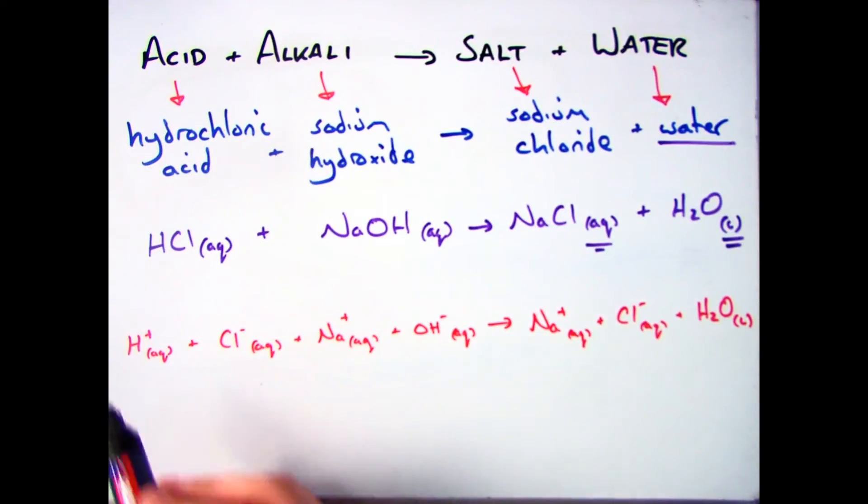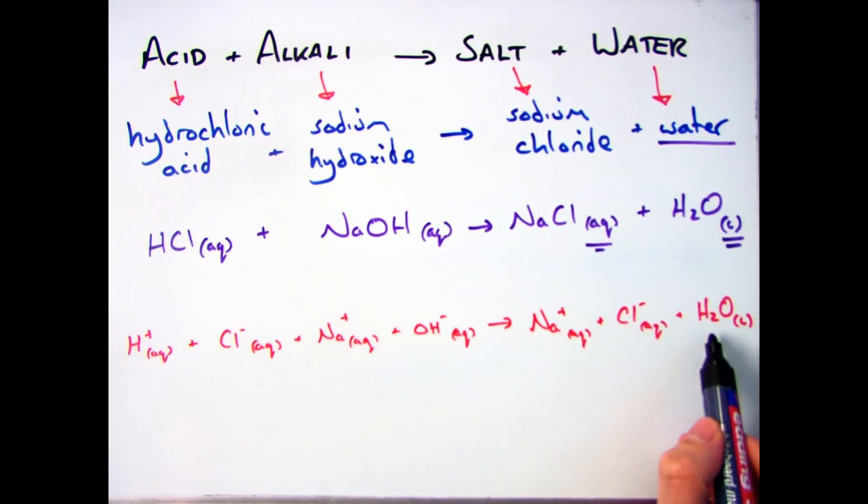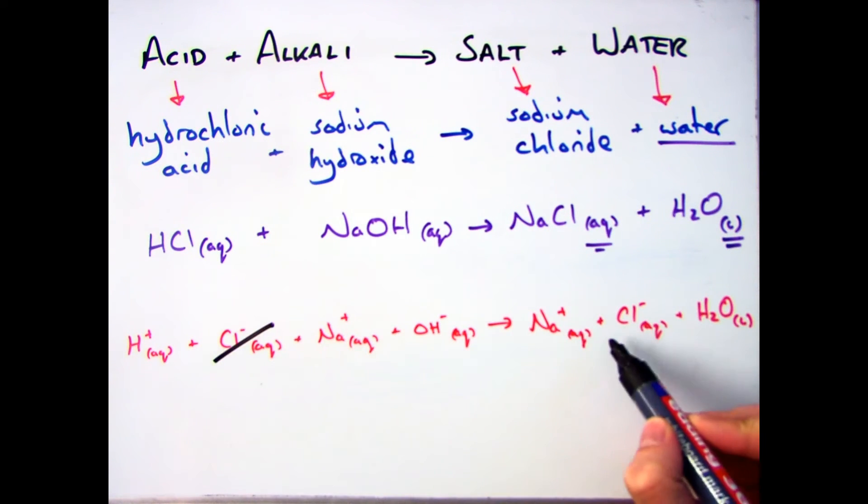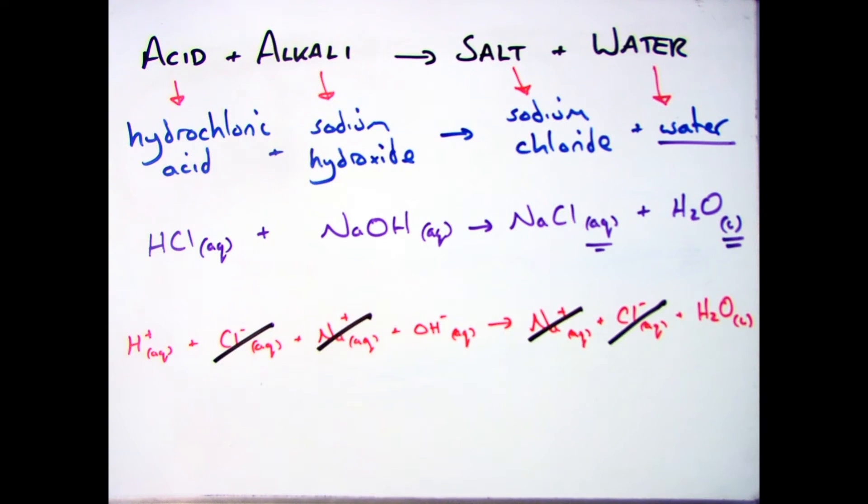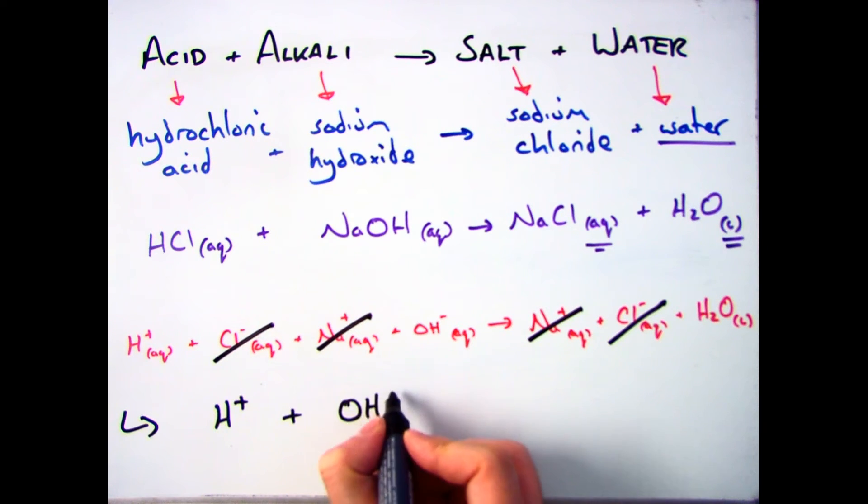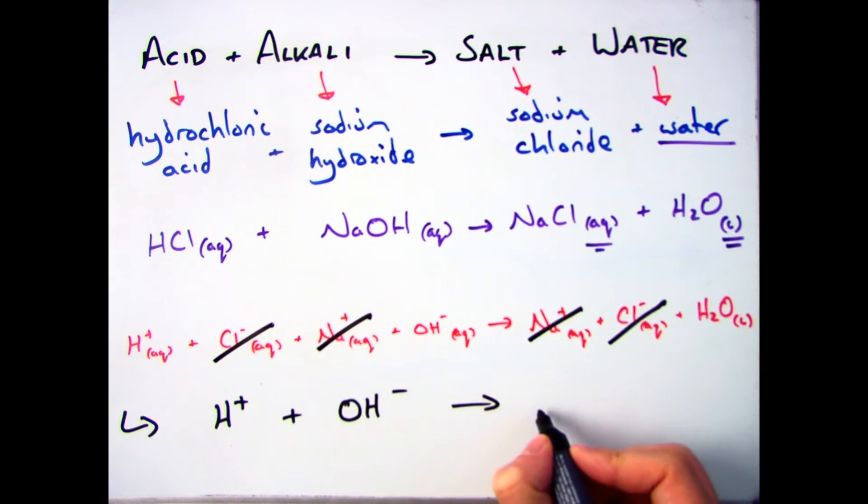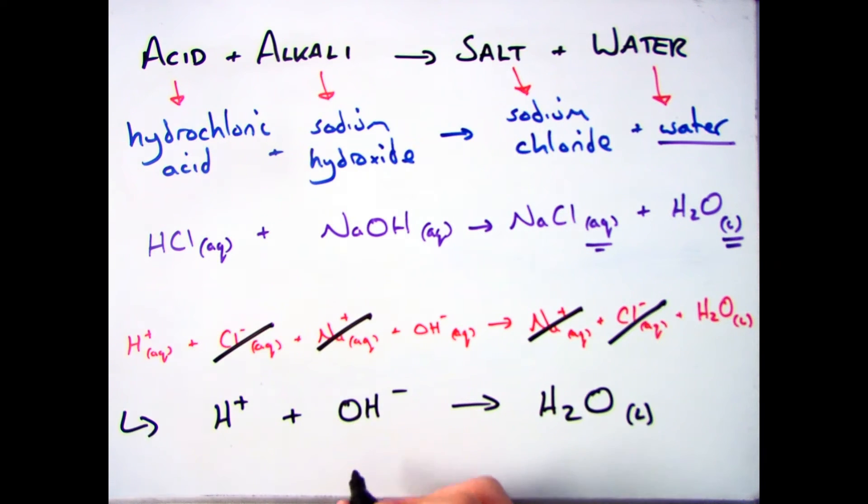To prove that in a neutralization reaction, you get water given off, and that's what happens to the ions, what you do now to finish off your ionic equation is cross out the same thing on both sides. We have Na plus and Cl minus on both sides, which are identical, leaving you just with your H plus and your OH minus on the left in your reactants, and your H2O, which is a liquid, on the right hand side. And that is my ionic equation.